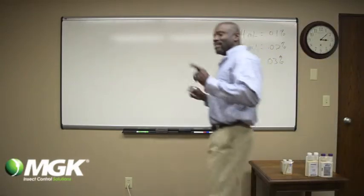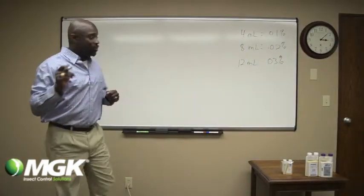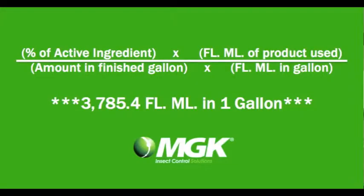What's interesting here is if you remember the formula where you'd have the percent active ingredient times the number of ounces, we're just going to change this to milliliters instead of ounces because this product is in milliliters, not ounces.